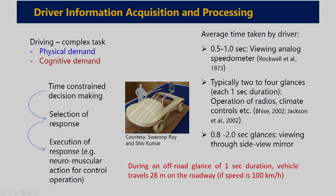While the driver is doing this type of in-vehicle activity, his primary attention from the road is shifted to inside the vehicle. If we consider that vehicle speed is 100 kilometers per hour, within 1 second the vehicle travels 28 meters, and within this distance the driver is actually not looking at the road — he is looking inside the vehicle for performing different types of operations.